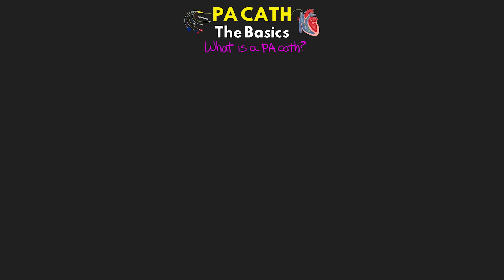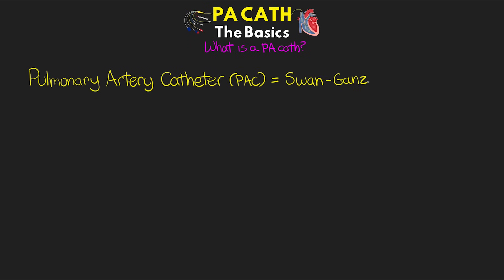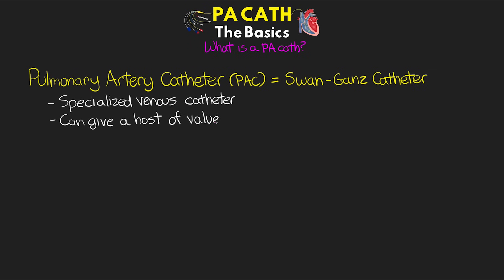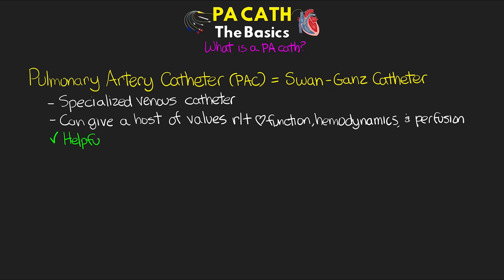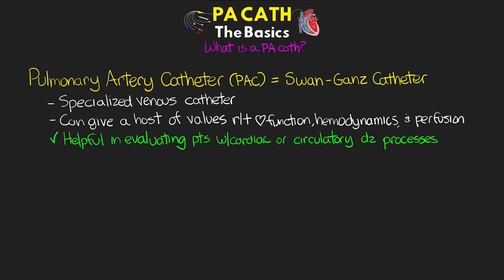So what is a PA catheter? The pulmonary artery catheter, or PA cath or PAC, is also called the Swan-Ganz catheter. It's a specialized venous catheter that can give us a whole host of values related to cardiac function, hemodynamics, and perfusion. These can be useful in evaluating patients with various cardiac or circulatory disease processes, including pulmonary hypertension as well as various shock states.